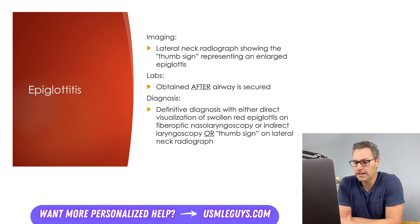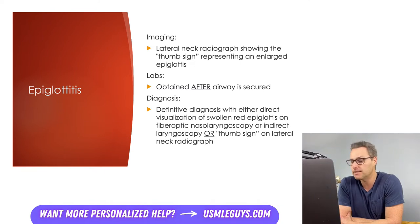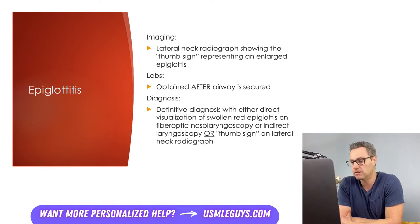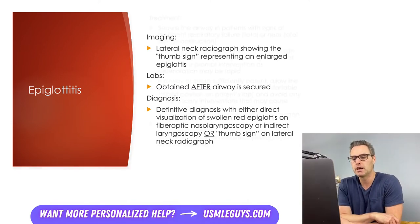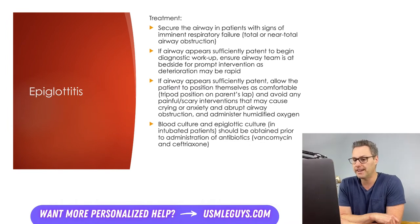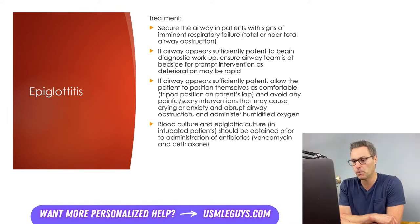Once the airway is secured, labs will typically show an elevated white blood cell count, and blood and epiglottic cultures can safely be obtained to identify the causative organism. The definitive diagnosis is made with either direct visualization of a swollen red epiglottis on fiber optic nasolaryngoscopy or indirect laryngoscopy, or the presence of that characteristic thumb sign on lateral neck radiography. Treatment includes promptly securing the airway with endotracheal intubation in the case of imminent respiratory failure. If the airway appears sufficiently patent, ensure the airway team is at bedside.